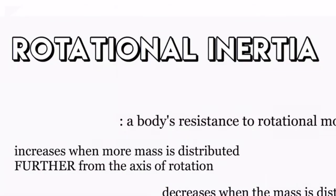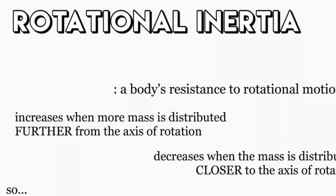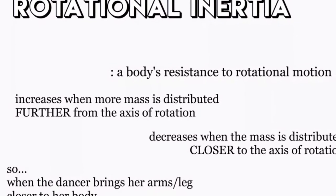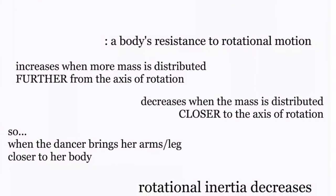Rotational inertia is the body's resistance to rotational motion. It increases when more mass is distributed further from the axis of rotation and decreases when the mass is distributed closer to the axis of rotation.